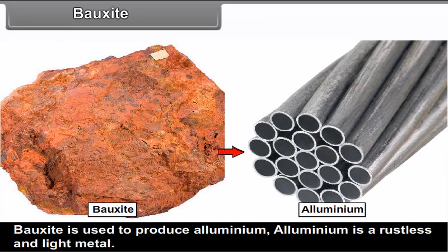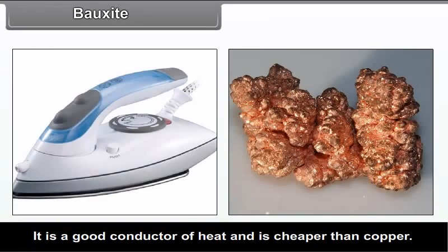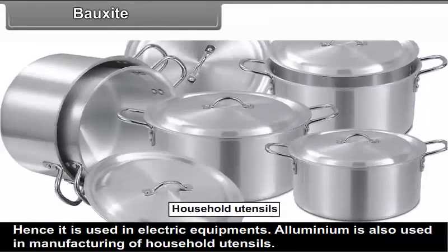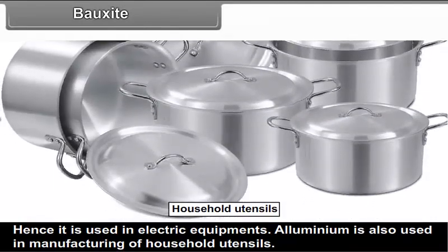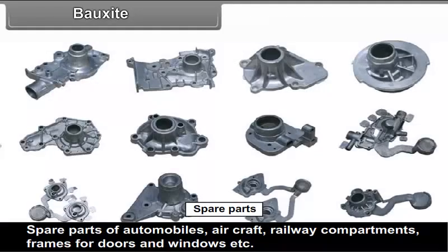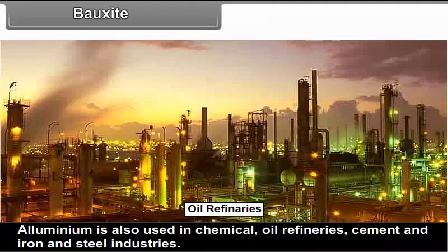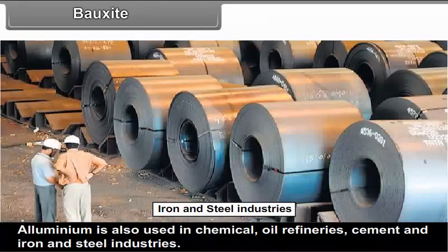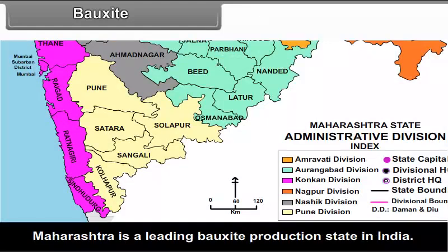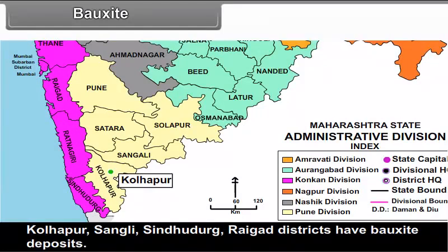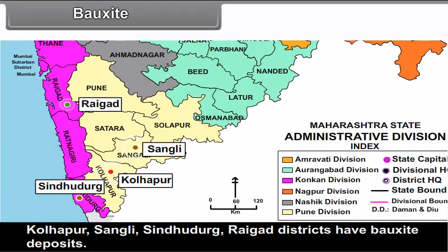Bauxite: Bauxite is used to produce aluminium. Aluminium is a rust-resistant and light metal. It is a good conductor of heat and is cheaper than copper, hence it is used in electric equipment. Aluminium is also used in manufacturing of household utensils, spare parts of automobiles, aircraft, railway compartments, frames for doors and windows, etc. Aluminium is also used in chemical, oil refineries, cement and iron and steel industries. Maharashtra is the leading bauxite-producing state in India. Kolhapur, Sangli, Sindhudurg and Raigad districts have bauxite deposits.